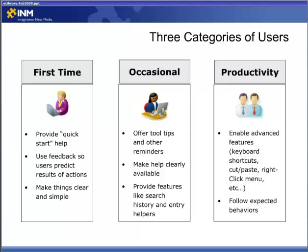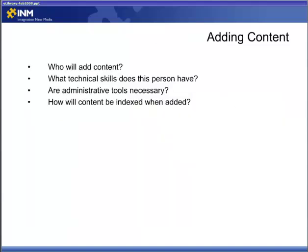Productivity users are going to expect all of the functions and the experience they would have on a desktop application. They'll look for things like Ctrl+C for cut and paste and right-click context menus. They'll also be very aware if your e-library doesn't follow expected behavior — if a button is a button, it should function like a button. Make sure the user interface and experience are designed to follow the expectations of all three types of users.